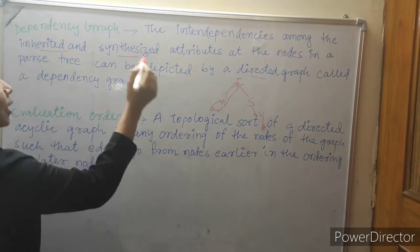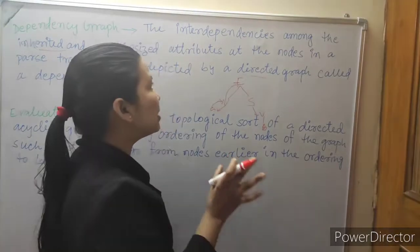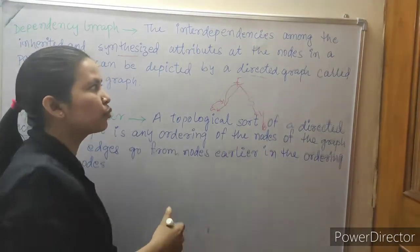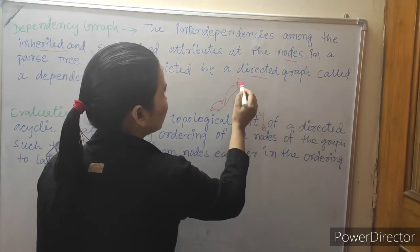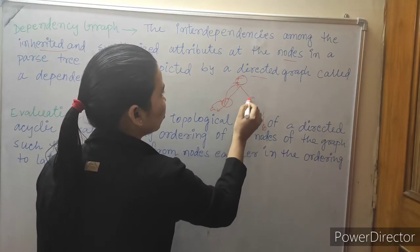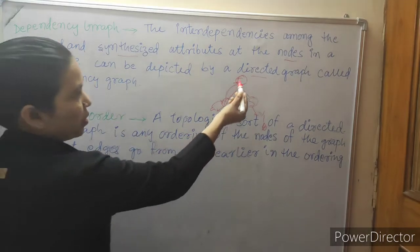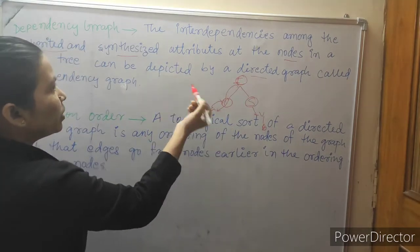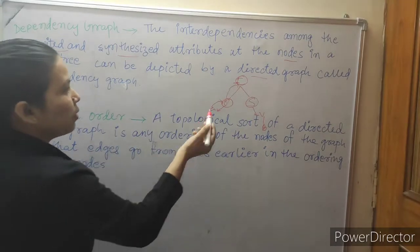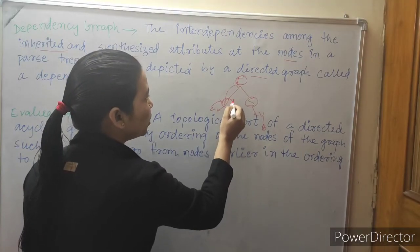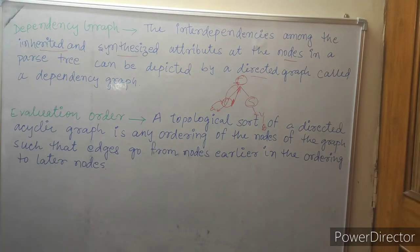The dependency graph shows how one attribute depends on another. The nodes — for example, E is a node, V is a node, S is a node — in a parse tree can be depicted by a directed graph called a dependency graph. The values have dependencies to other ones; this is called the dependency graph.